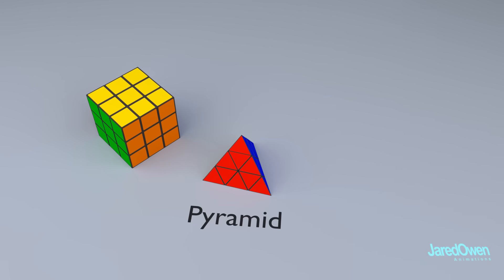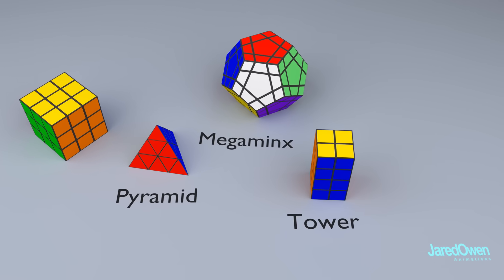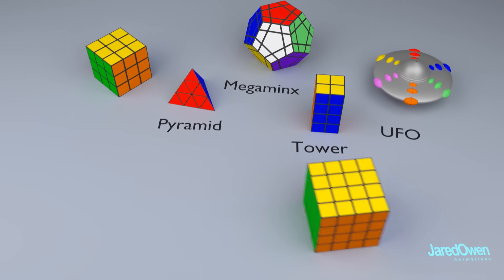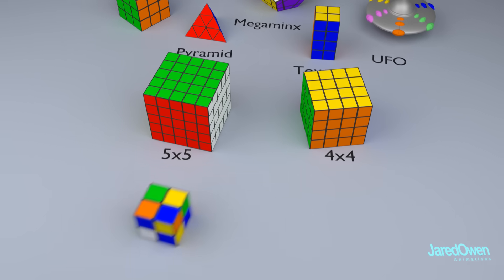Here's the Pyramid, the Megaminx, the Tower Cube, and the UFO. There's also a lot of larger sizes of the cube—the 4x4 and the 5x5, and smaller sizes such as the 2x2.